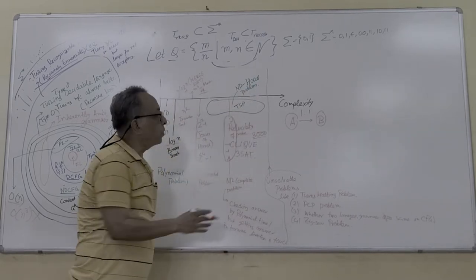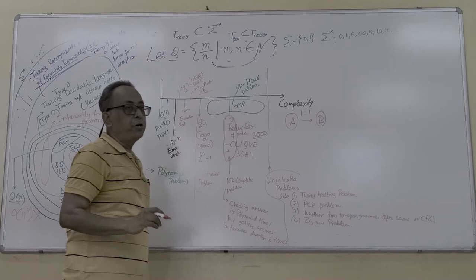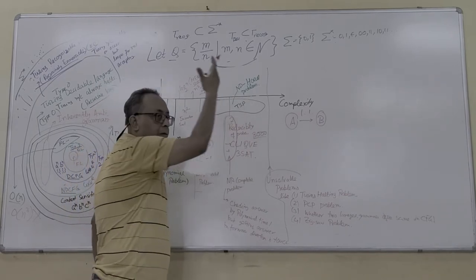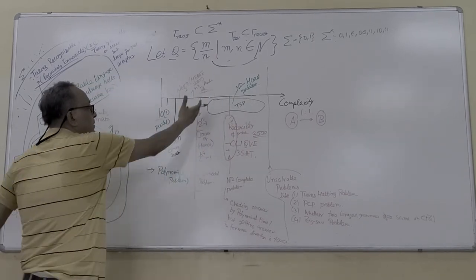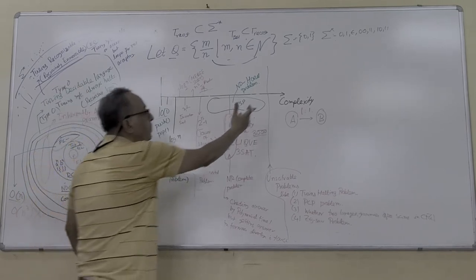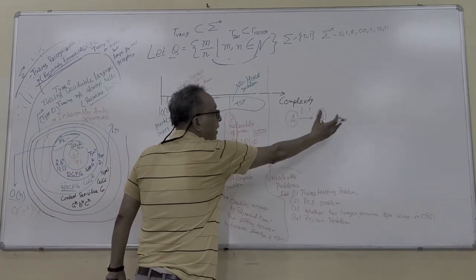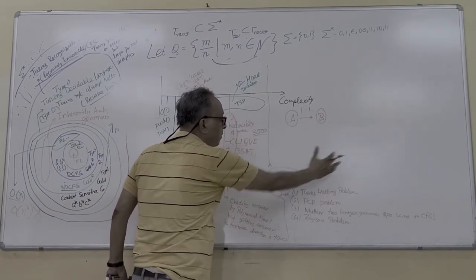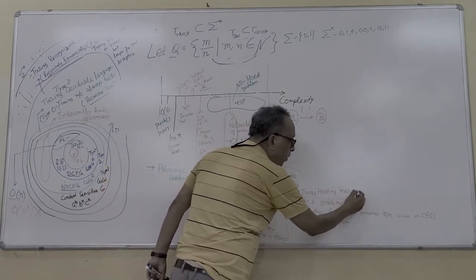Here, even if you are given a solution, you cannot check it in polynomial time. It might take exponential time. And sometimes, a problem algorithm cannot be found. That is the unsolvable problem. That we have already covered in the halting problem.